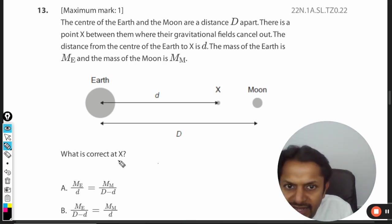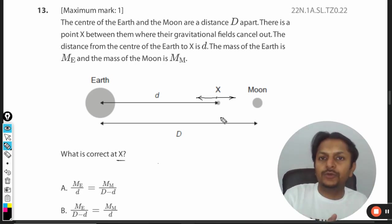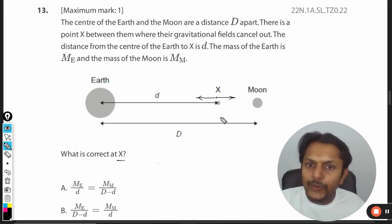The mass of the Earth is ME and the mass of the Moon is MM. What is correct at X? Clearly it is given that the net gravitational field because of Earth and because of Moon is equal to each other. The net is zero, so we are going to equate these two.